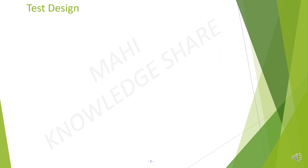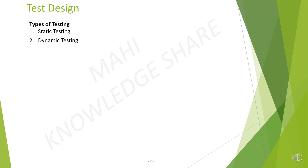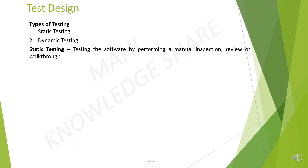Types of testing. There are two types of testing. One is static testing, and the other one is dynamic testing. Static testing is testing the software by performing a manual inspection, review, or walk-through.